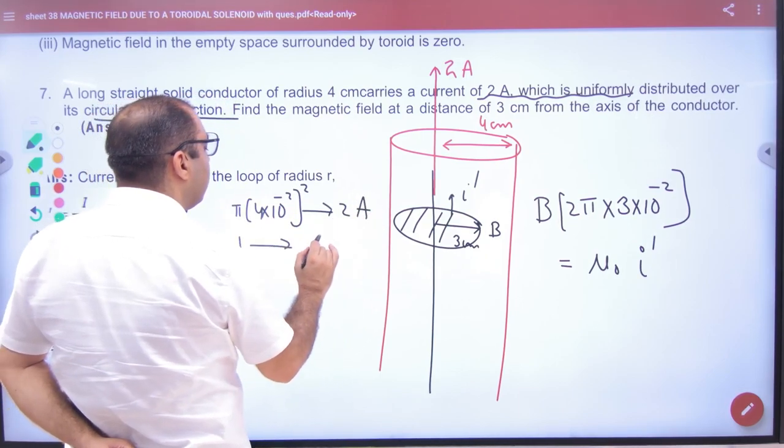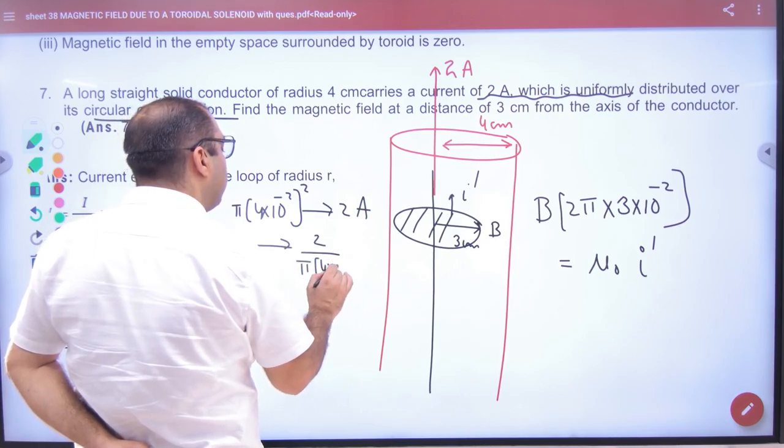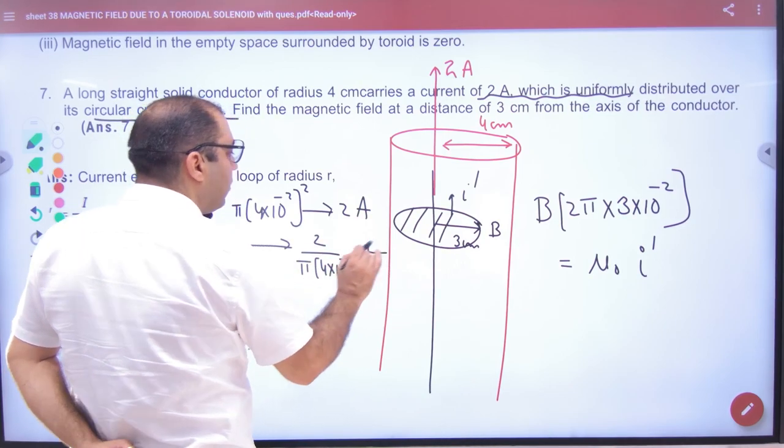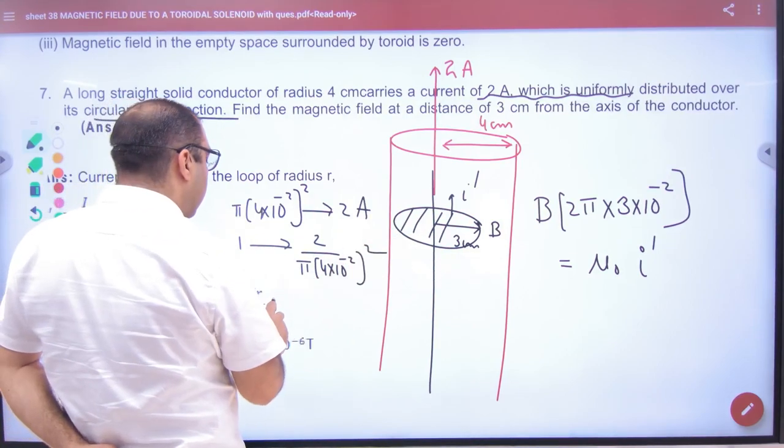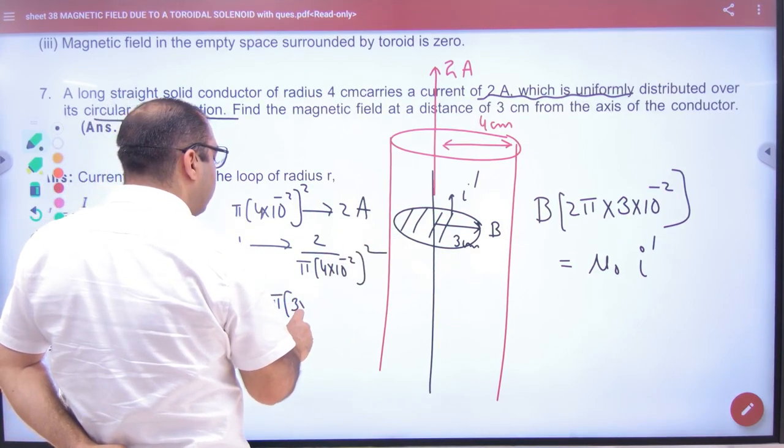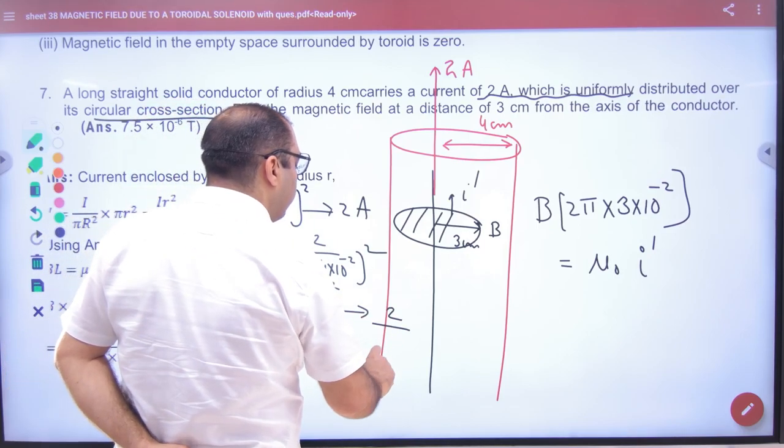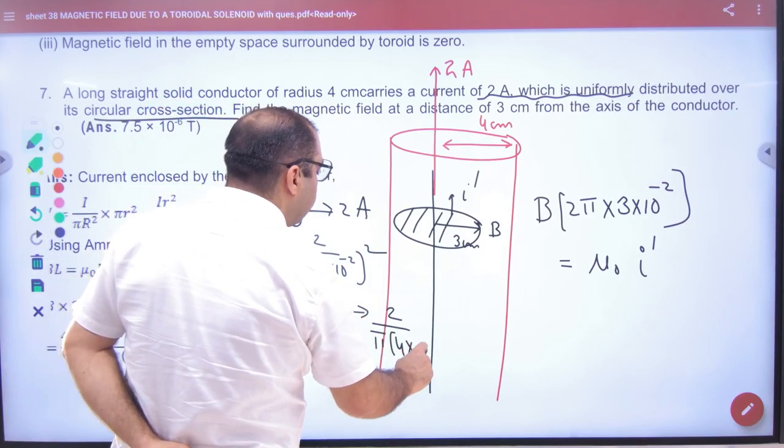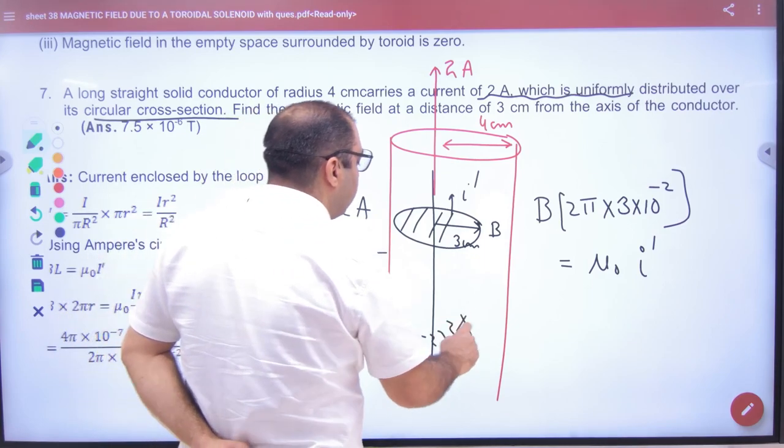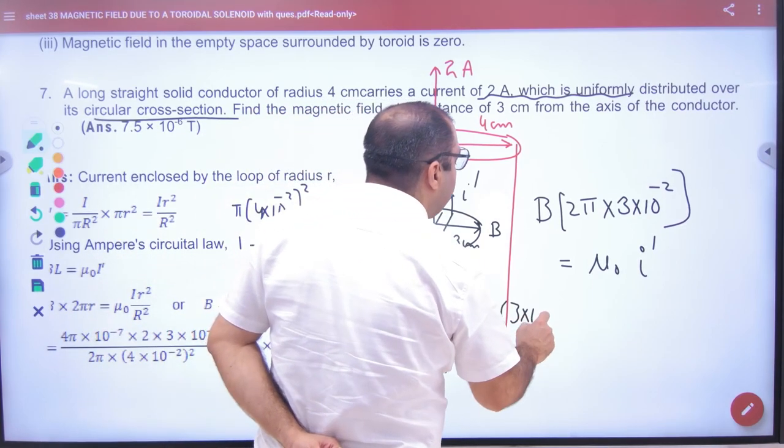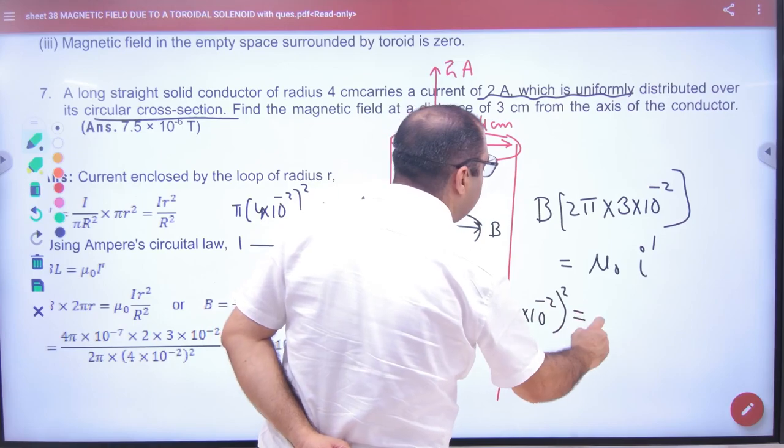Then 2 divided by π into 4 into 10 to the power minus 2 whole squared, and the area is π into 3 into 10 to the power minus 2 squared. The current is 2 divided by π into 4 into 10 to the power minus 2 squared times π into 3 into 10 to the power minus 2 squared. This is I dash.